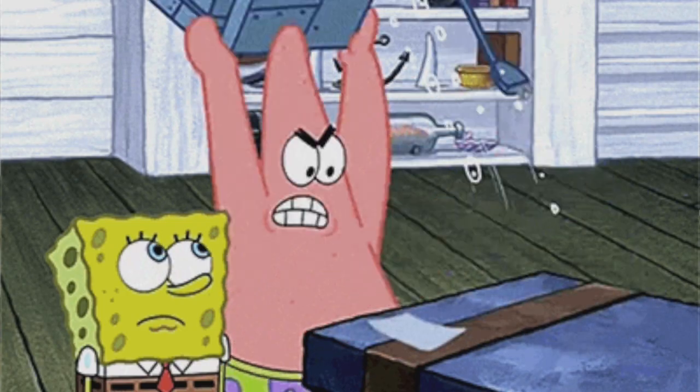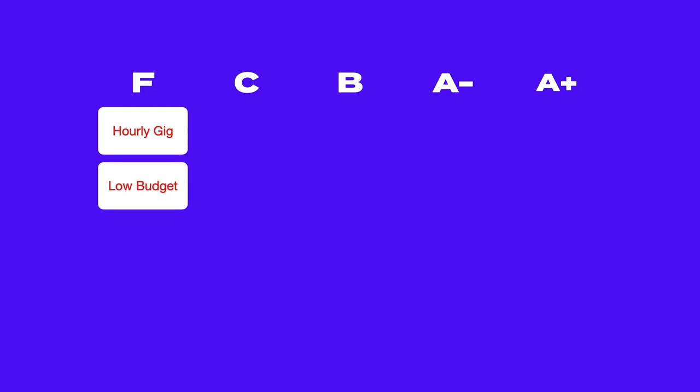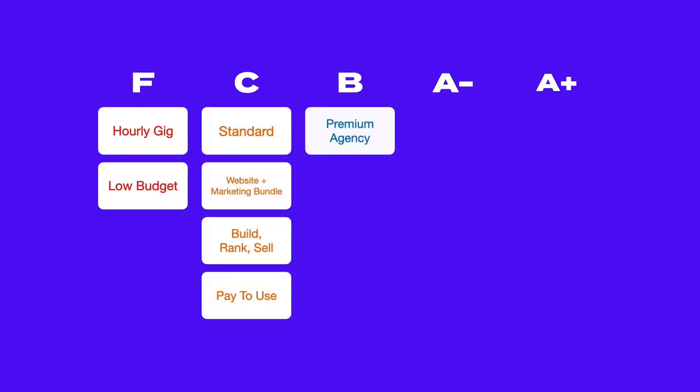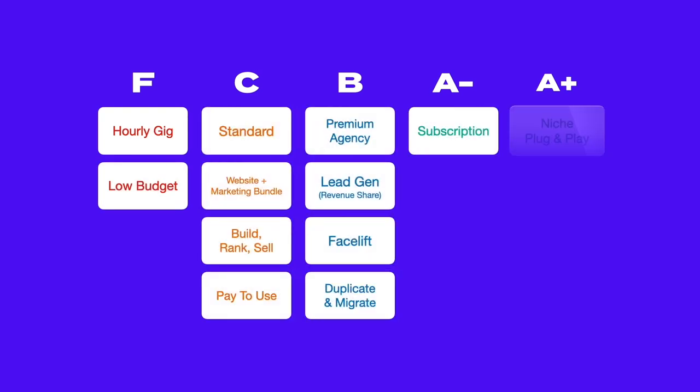What doesn't get talked about a lot is that most of these models are actually broken, and if you use those models, you're just setting yourself up to fail. In this video, I'm going to break down 12 very specific business models used by designers, and I've given each one a grade based on four factors: experience needed, workload, revenue potential, and difficulty. By the end of this video, you're going to go back and change something about the way you're running your business that's going to help you earn way more money.